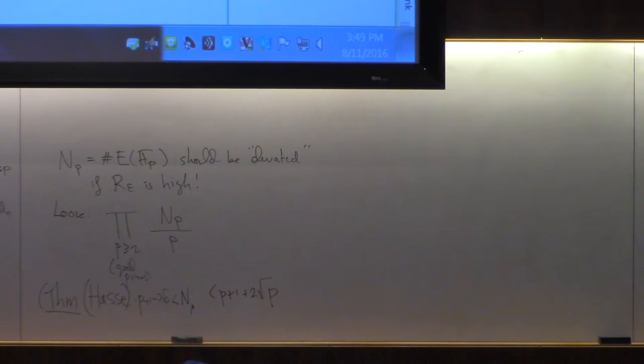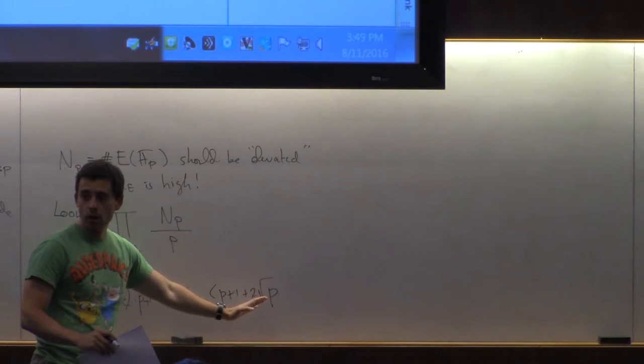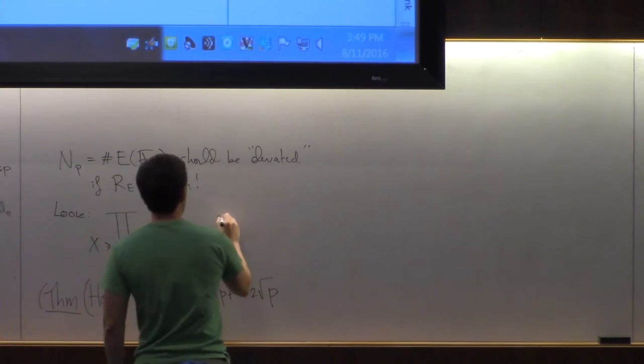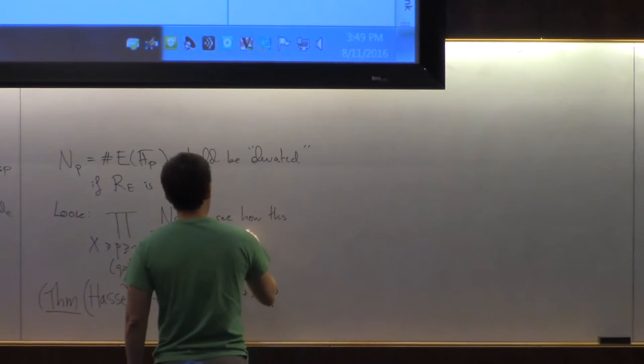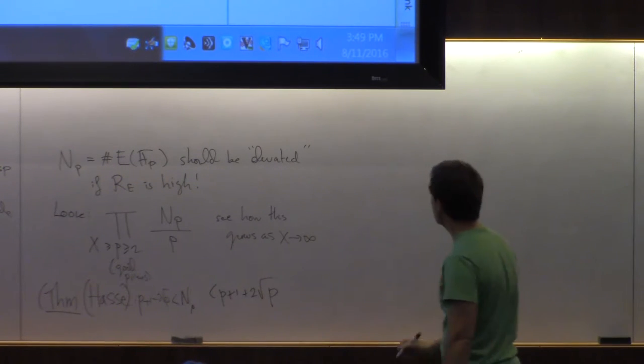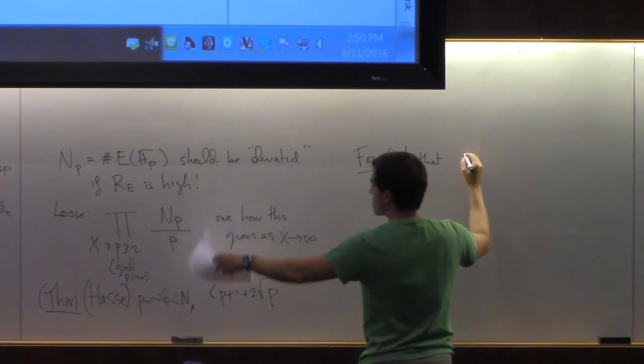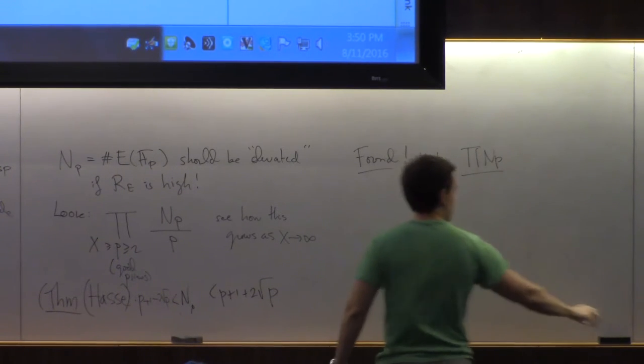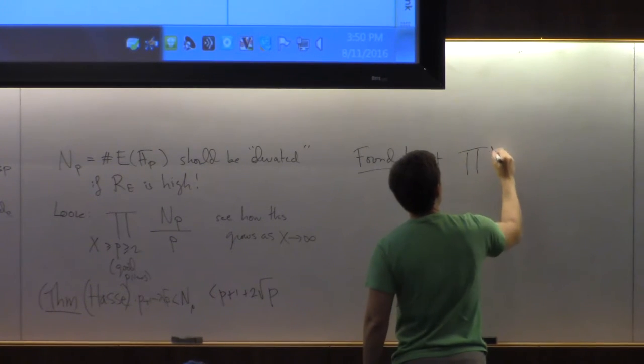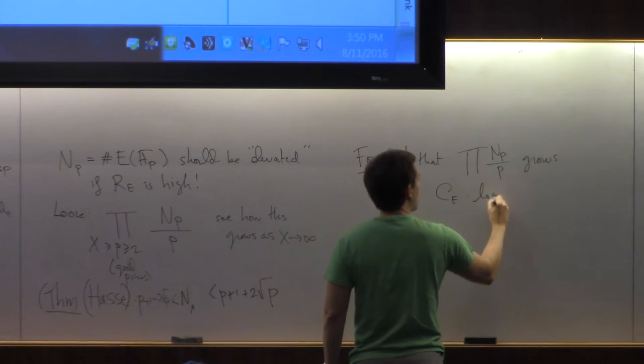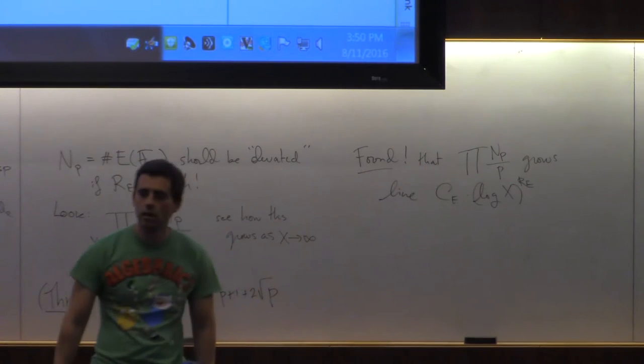Okay? It's in the ballpark of p, or in fact the ballpark of p plus 1, so you want to know there's this variation, it goes in that interval, so you want to know, so you want to normalize it divided by p, and see how much variation, and if there is rank, you expect that it's going to be leaning towards this side more often than not. Okay? So look at this, and let's cap it with x, and see how this grows as x goes to infinity. And what they found, that this function grows like constants, that depends on the elliptic curve, and the logarithm of x to the rank.